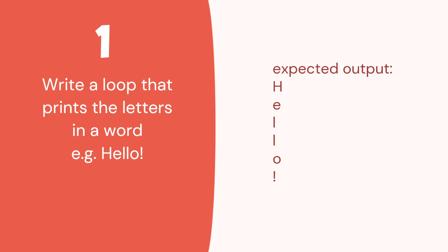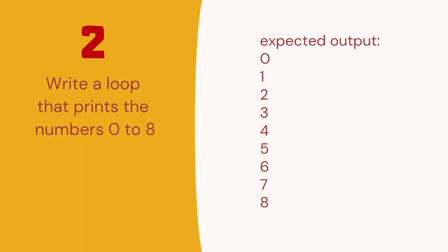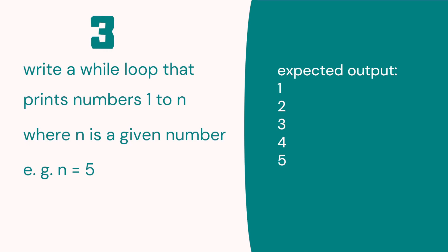Write a loop that prints the letters in a word. Example: hello. So the output you can see here we've got uppercase H, E, L, L, O, exclamation mark. Two: write a loop that prints the numbers 0 to 8. Here's the expected output. Number 3: write a while loop that prints numbers 1 to n where n is a given number. So n equals 5, for example. We'll print 1 to 5.